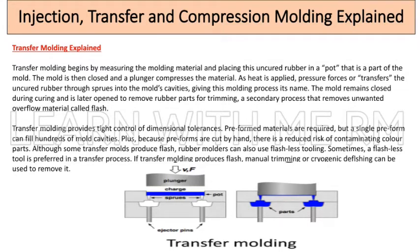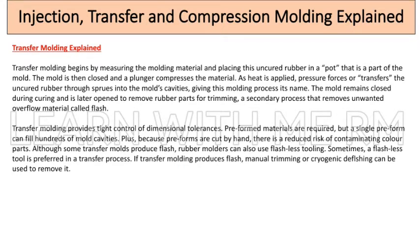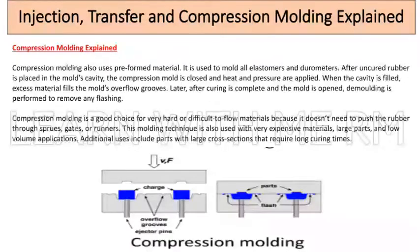If transfer molding produces flash, manual trimming or cryogenic deflashing can be used to remove it. Compression molding also uses preformed material and is used to mold all elastomers and durometers. After uncured rubber is placed in the mold's cavity, the compression mold is closed and heat and pressure are applied.